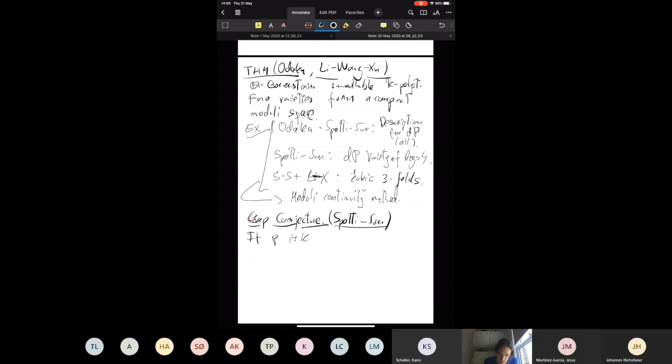Gap conjecture: if P is a KLT singularity, by singularity I mean definitely not smooth, of an n-dimensional variety W, then the normalized volume of W is less than or equal to (2n-1)^n. It's called gap conjecture because if P was smooth, the normalized volume would be strictly larger than this number. Hence there is a gap between what normalized volumes can achieve. Normalized volume is an invariant that measures the local volume around the singularity.